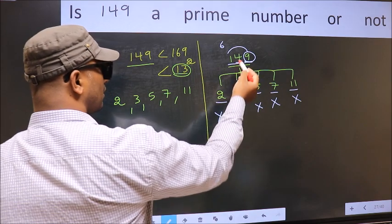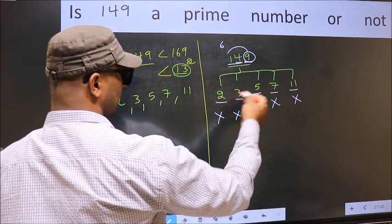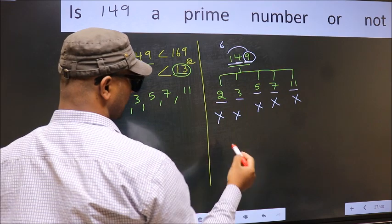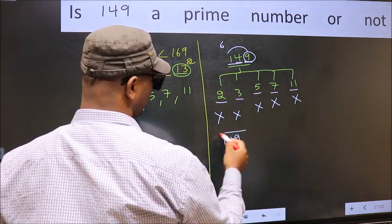So 149 is not divisible by any of these numbers. Hence, 149 is a prime number.